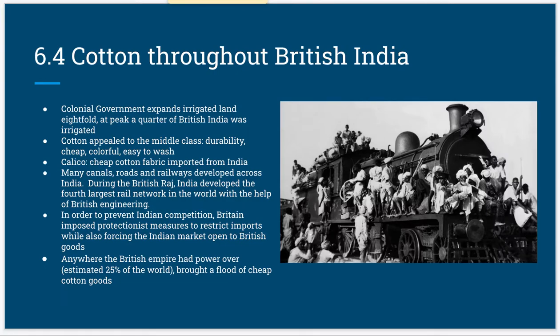The colonial government increased the irrigated area about eightfold in India. Eventually, more than a quarter of the land of British India was irrigated, compared to 5% in the Mughal Empire previously. Irrigation was extended both as a source of revenue and as a measure to mitigate famines.